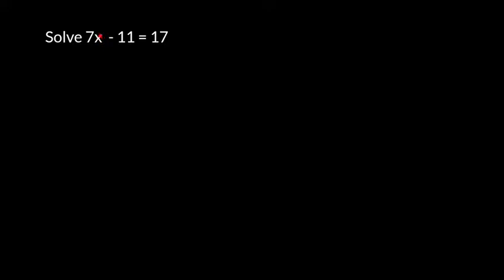To solve this two-step equation, we're going to get x by itself by undoing the operations which had been done to it in reverse order of operations.